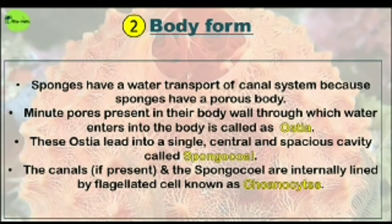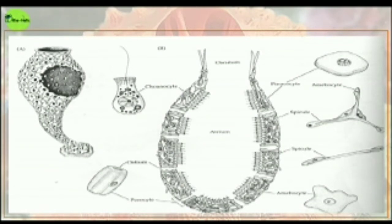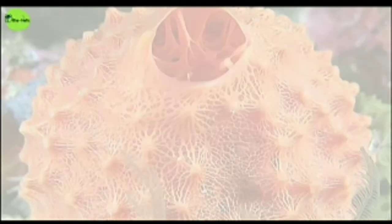The second characteristic is body form. Sponges have a water transport canal system. They have a porous body, and the minute pores present in their body wall through which water enters are known as ostia, singular ostium. These ostia lead into a single central spacious cavity called the spongocoel. The canals are internally lined by flagellated cells known as choanocytes, which is a very important character of sponges.